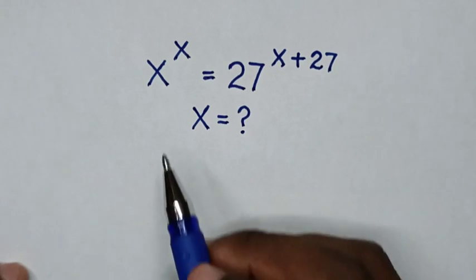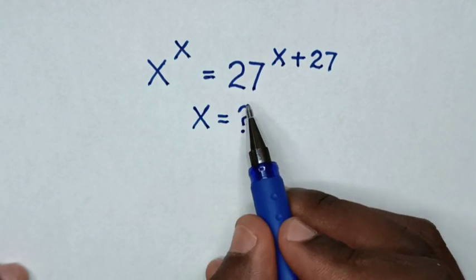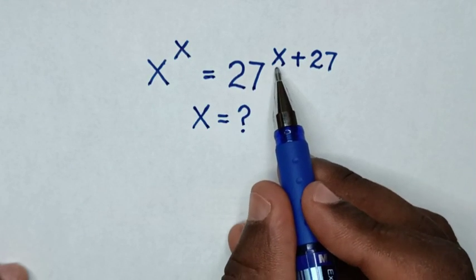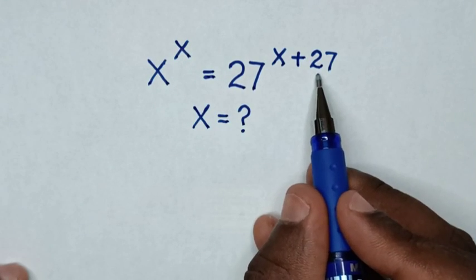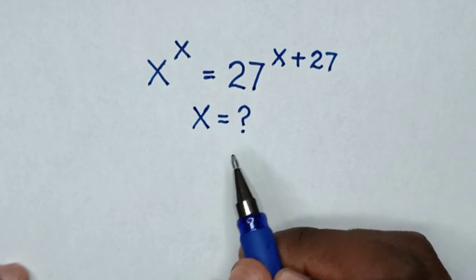Hello! How to solve x power of x is equal to 27 power of x plus 27, to find the value of x.